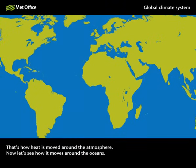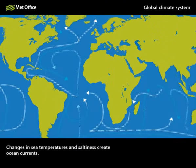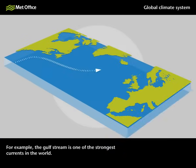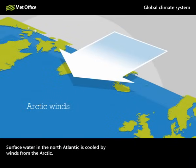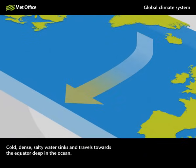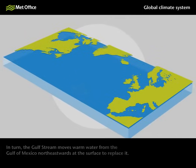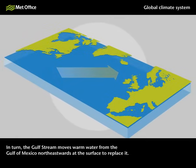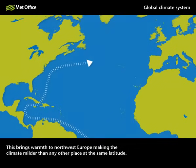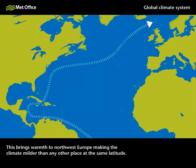Now let's see how it moves around the oceans. Changes in sea temperatures and saltiness create ocean currents. For example, the Gulf Stream is one of the strongest currents in the world. Surface water in the North Atlantic is cooled by winds from the Arctic. Cold, dense, salty water sinks and travels towards the equator deep in the ocean. In turn, the Gulf Stream moves warm water from the Gulf of Mexico northeastwards at the surface to replace it. This brings warmth to Northwest Europe, making the climate milder than any other place at the same latitude.